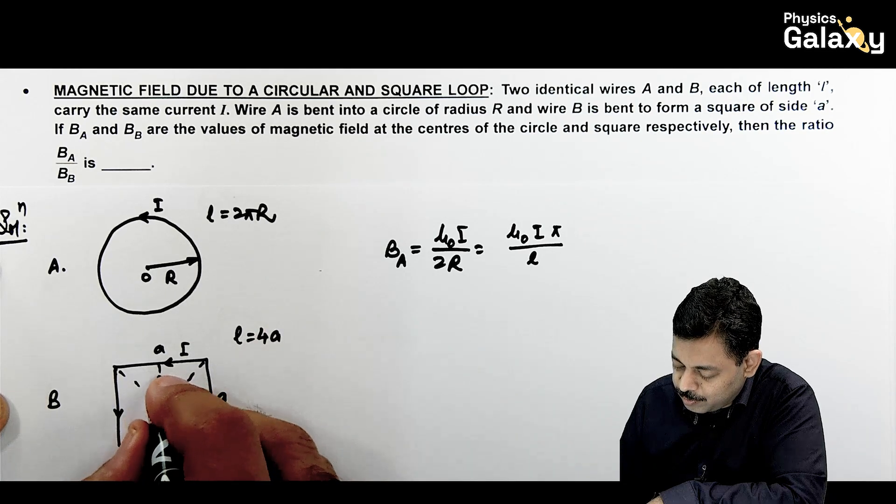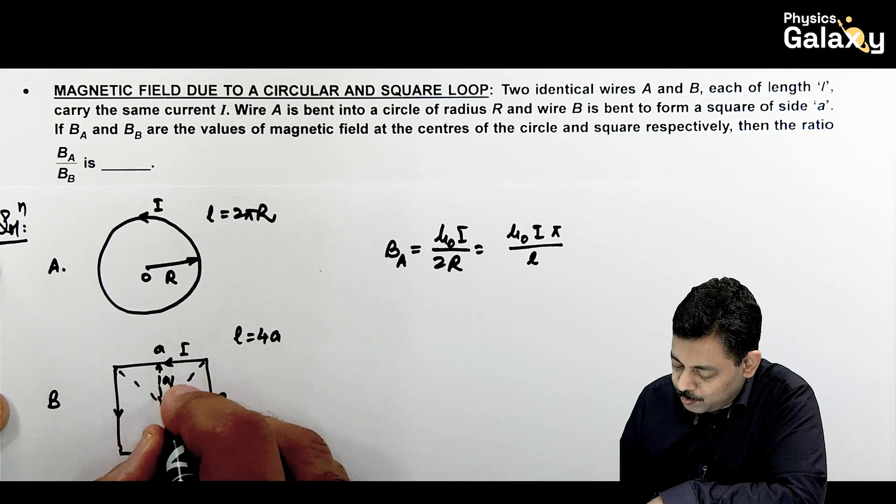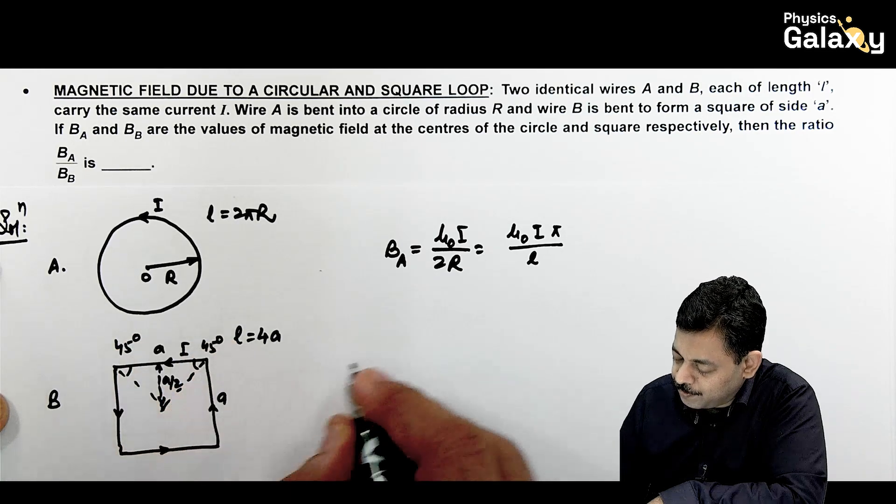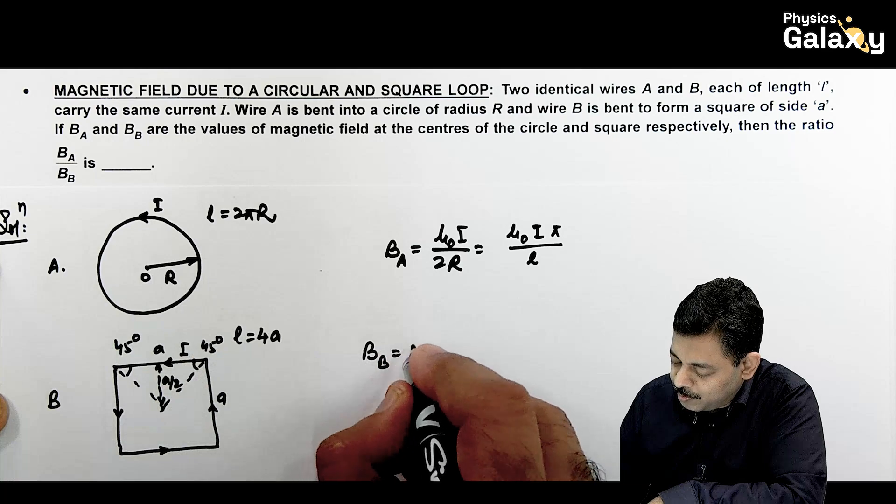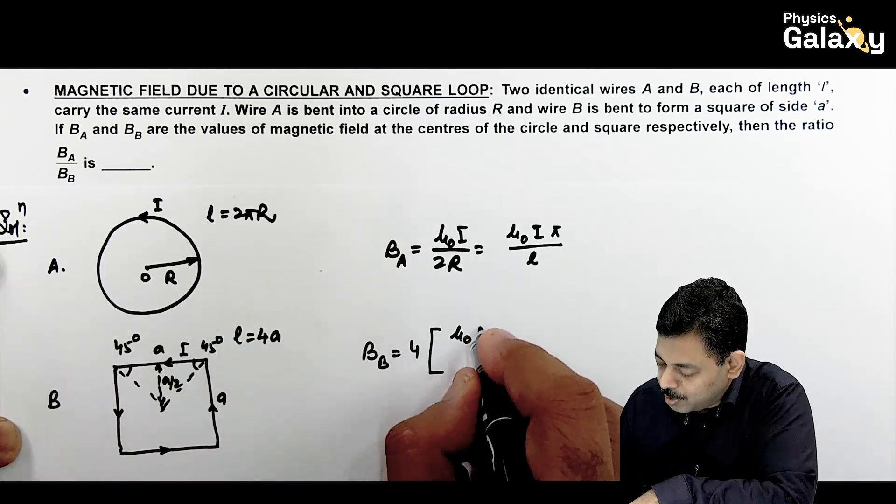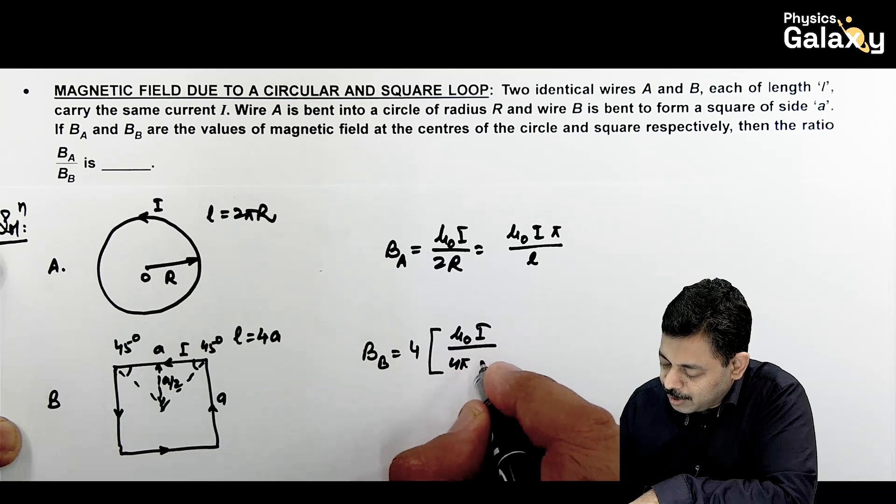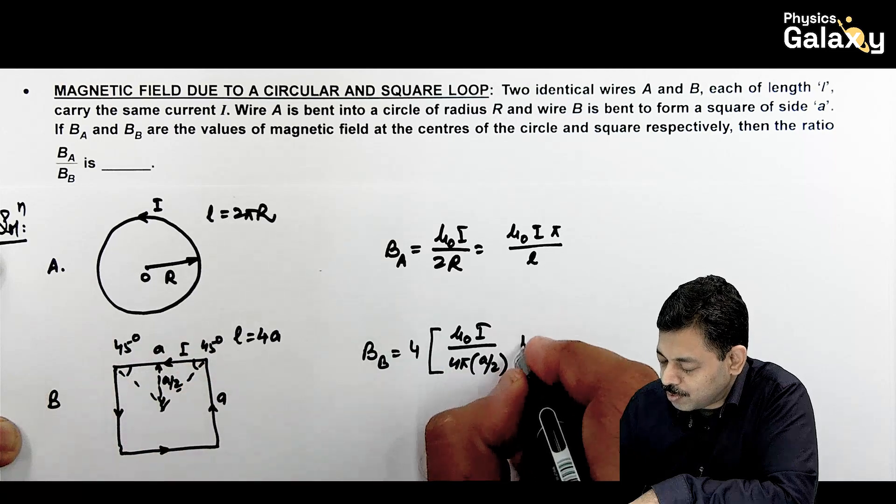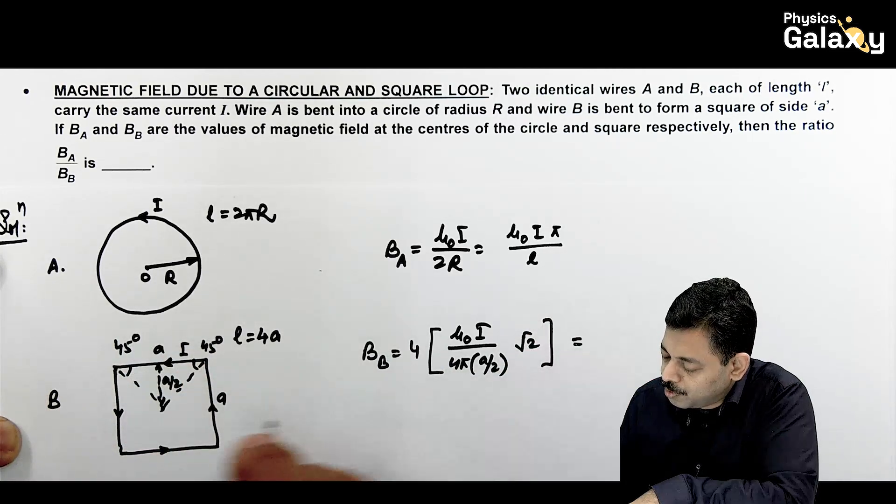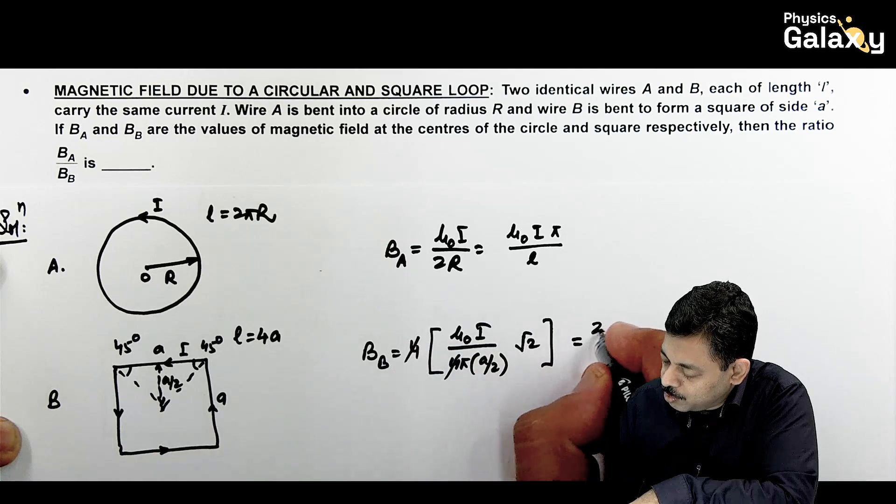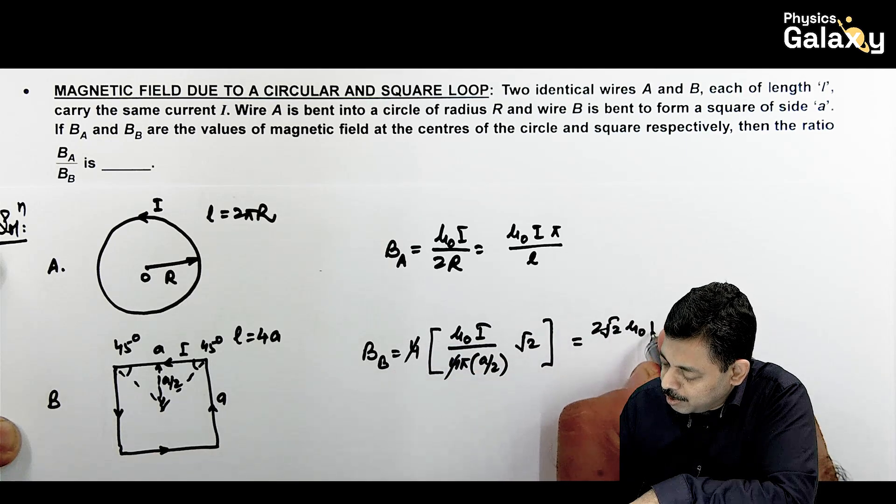The result: magnetic field at B will be 4 times the result due to one side, which is mu naught i divided by 4 pi r. We put r as a by 2, and cos 45 plus cos 45 is 1 by root 2 plus 1 by root 2, which is root 2. So see what result we are getting: 4 cancels out. This will be 2 root 2 mu naught i divided by pi a. And a we can put as l by 4, so it becomes 8 root 2 mu naught i by pi l.